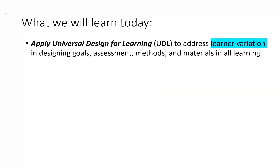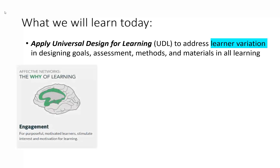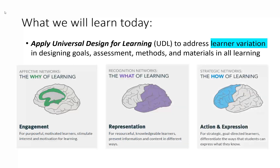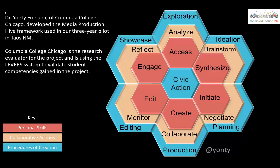In a little more detail, for UDL, when we look at learner variation we're using the three brain networks. The affective networks — the why of learning — control engagement. The recognition networks — the what of learning — deal with representation. And the strategic networks of the brain are the how of learning: action and expression. All three of these are embraced in Dr. Yanti Friesem's model, the Media Production Hive, shown here. At all stages, people are looking at the personal skills that are used, the collaborative skills on a team, and then the community skills in the procedures of creation. So we'll see how this model helps you embrace UDL in your practice.